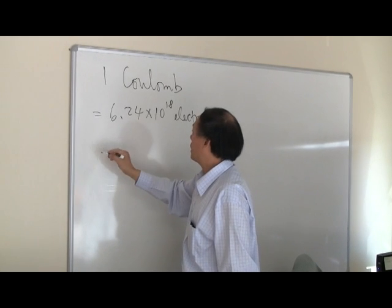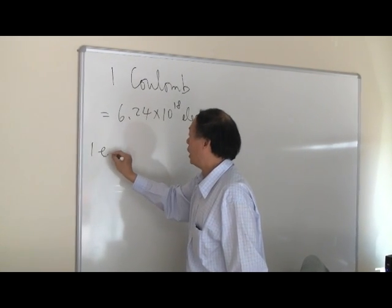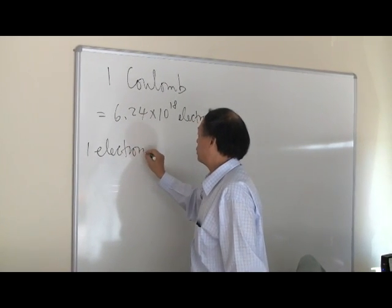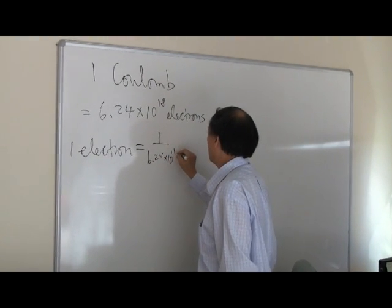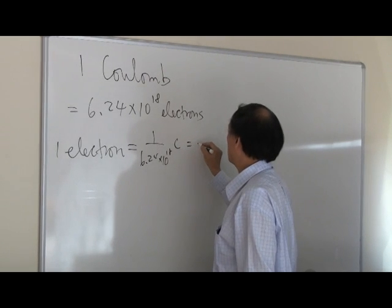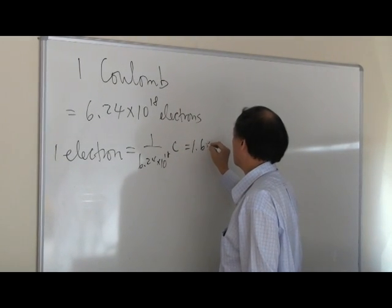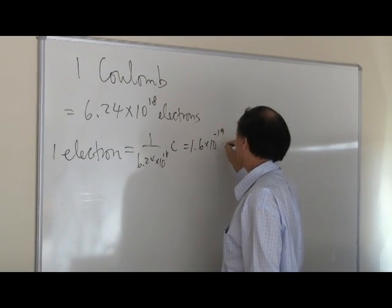So if you look at the inverse of that, one electron would have an electric charge of 1 over 6.24 times 10 to the 18 coulomb and therefore is equal to 1.6 times 10 to the minus 19 coulomb.